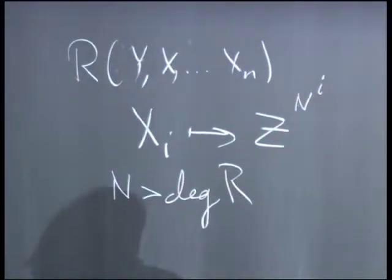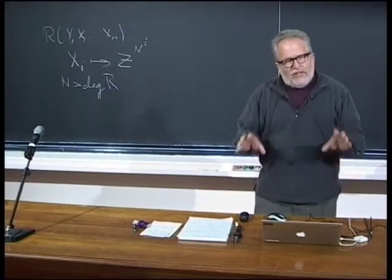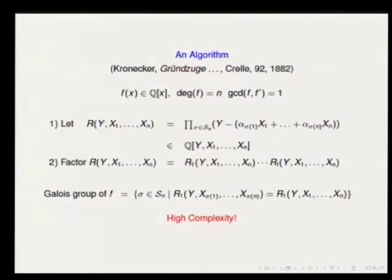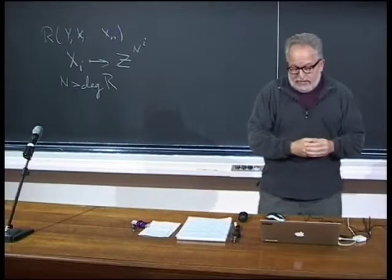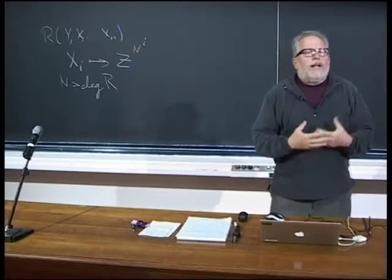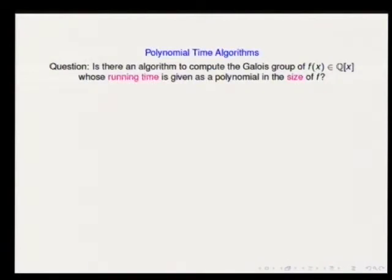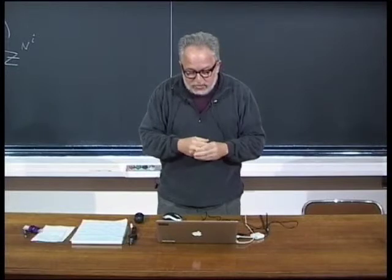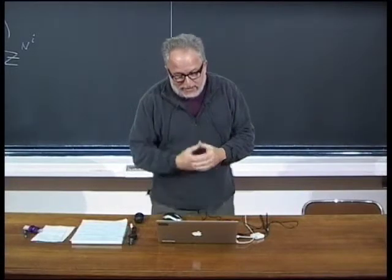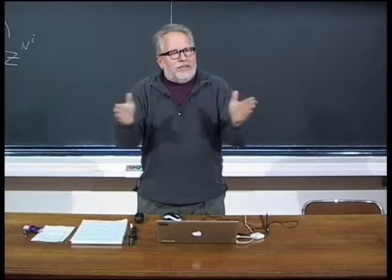One of the themes in the 20th century, going into the 21st century, was a formalization of the notion of algorithm, and along with that, a formalization of the notion of complexity. I'd like to spend some time thinking about the complexity of algorithms to calculate Galois groups. The measure of complexity I want to use is what's known as polynomial time. The question I want to ask is: is there an algorithm to compute the Galois group with running time that's a polynomial in the size of f?